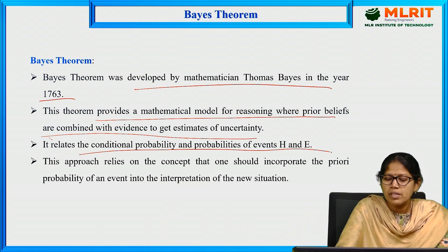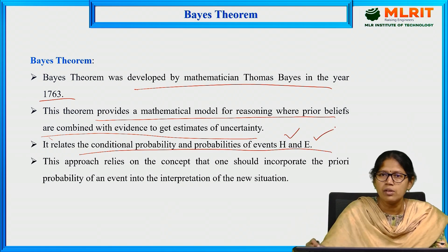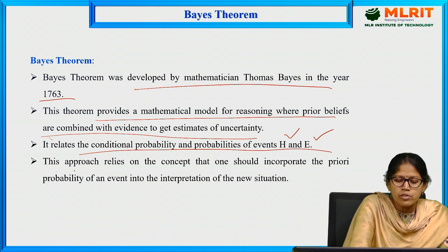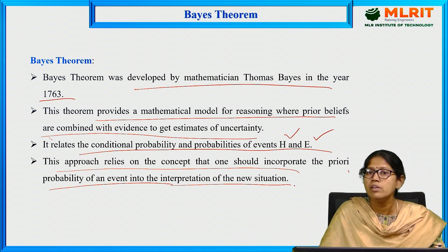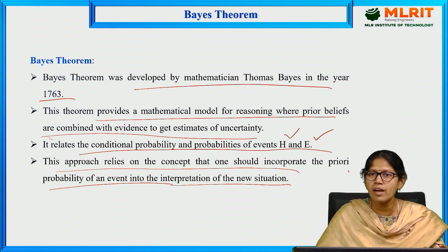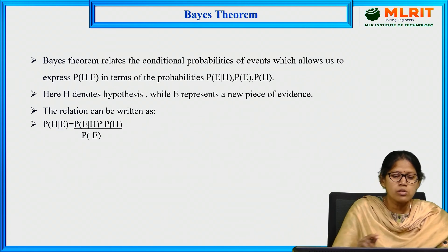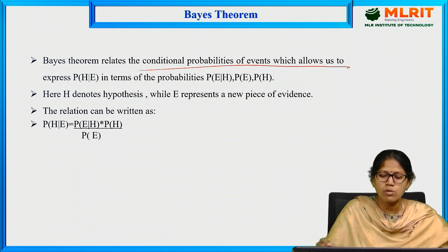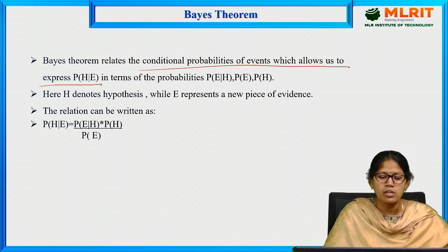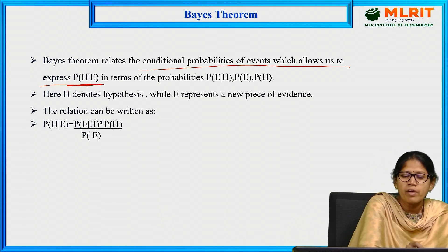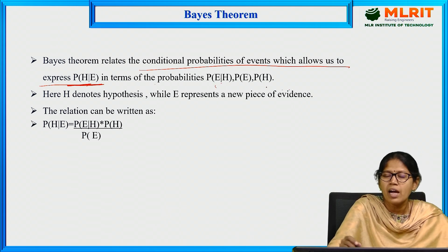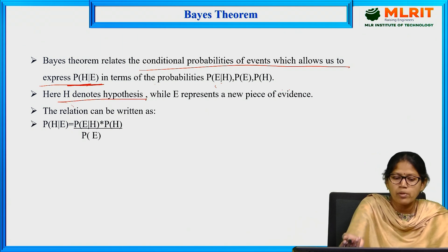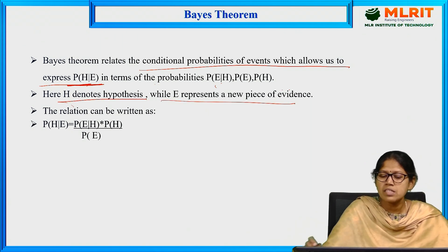It relates the conditional probability and probabilities of events H and E. This approach relies on the concept that one should incorporate the prior probability of an event into the interpretation of a new situation. Bayes' theorem relates the conditional probabilities of an event, which allows us to express the probability of H given E in terms of probabilities of E given H, probability of E, and probability of H. Here, H denotes the hypothesis — the assumption — while E represents a new piece of evidence.